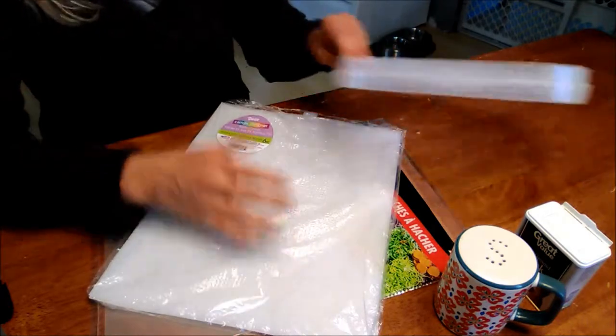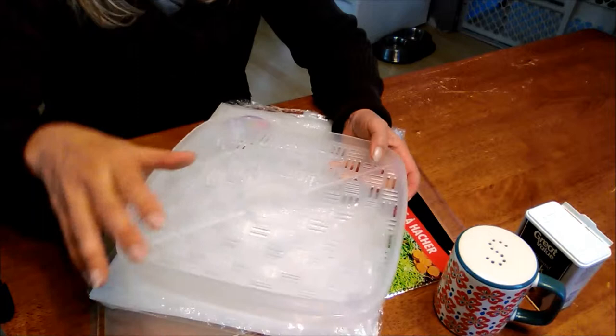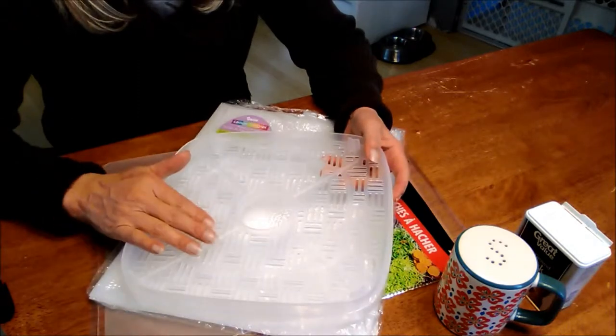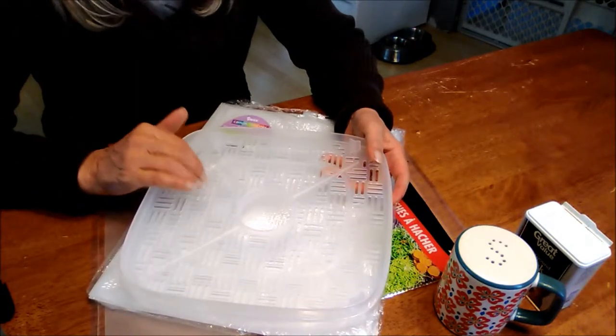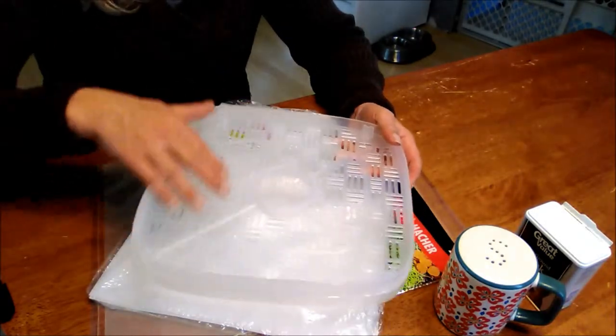Now the cabbage was so small that it did fall through but it collected in the bottom and I was able to get it back out. But going forward in the future, in order to avoid that, I'm going to make these inserts so that things will stay on the trays.